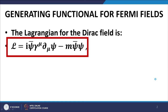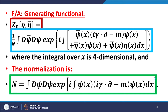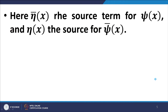We started with the Lagrangian for the Dirac field as the expression given in the red box. On the basis of this Lagrangian, we derived the path integral — the generating functional for the full Green's functions for the free Dirac field, given in the green box at the bottom of the slide. This is the normalized generating function with normalization factor 1/N. The normalization is obtained by omitting the source terms. In this generating functional, η̄(x) is the source term corresponding to ψ(x) and η(x) is the source term corresponding to ψ̄(x).